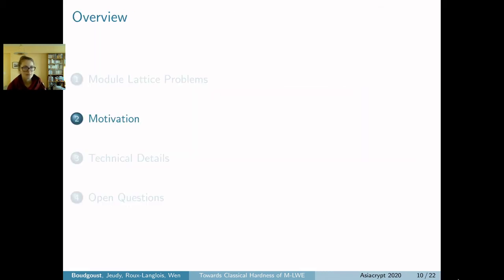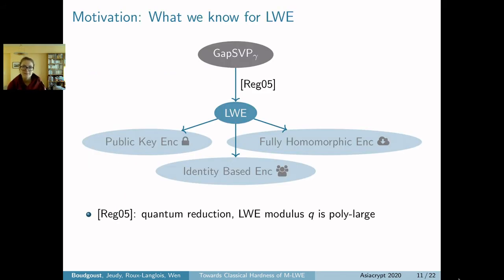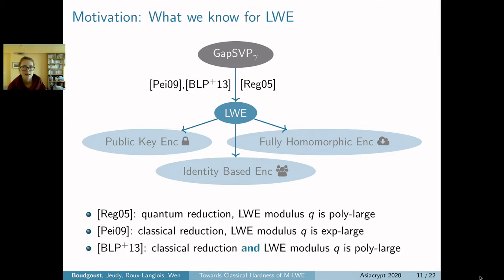We had the two lattice problems; I'd like to continue with motivating our results. What we know for LWE is that Regev introduced a quantum reduction from the approximate gap shortest vector problem to the LWE problem where the modulus can be small, and Peikert gave a classical reduction where the LWE modulus has to be large. Brakerski-Langlois-Peikert-Regev-Stehlé merged both results to give a classical reduction where the modulus can also be small.